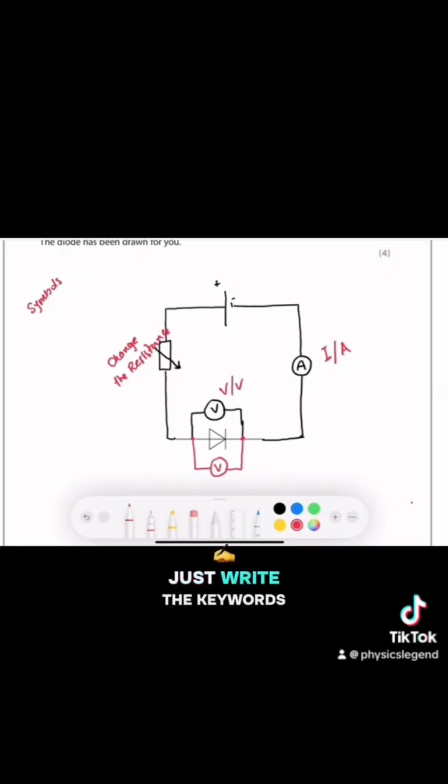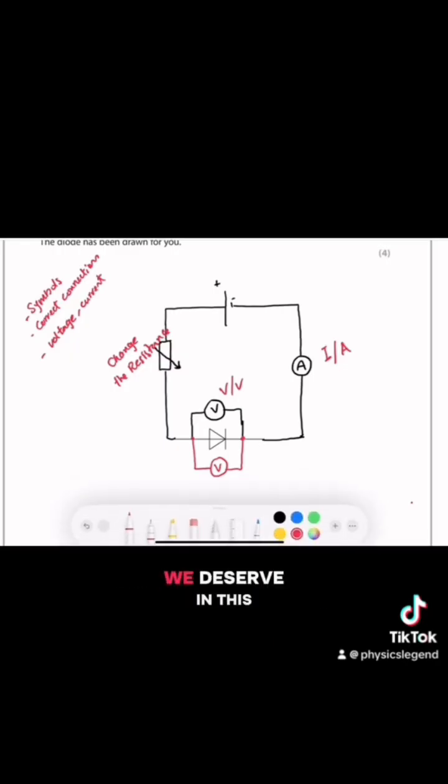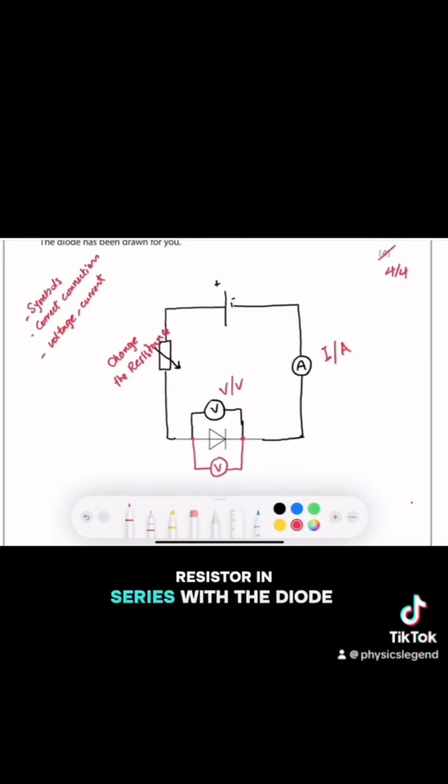You learned the symbols - write the key words, very important. You learned how to make correct connections. And how to measure voltage using the voltmeter, and how to measure the electric current in the electric circuit. We deserve, in this question, 4 out of 4. Because we drew a complete electric circuit with correct symbols for cell, ammeter and voltmeter. We connected the voltmeter in parallel with the diode. And we get 4 out of 4 for section A.